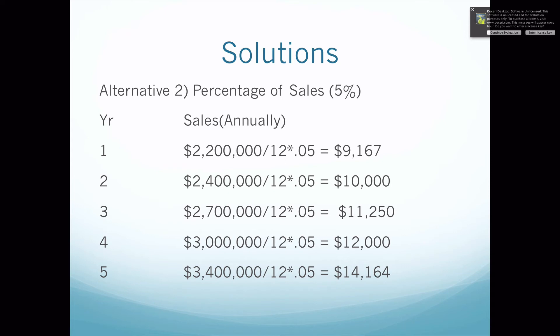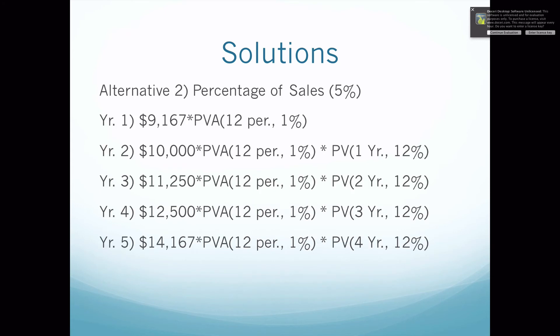Now that we've calculated our monthly sales figures, we need to discount them because we don't know our sales until the end of the month. We have to discount all 12 months, so we take the $9,167 monthly rent and multiply it by PVA for 12 periods at 1%. For years 2 through 5, we calculate each monthly rent, discount it for 12 periods at 1%, and then multiply by the present value factor for 1 through 4 years.